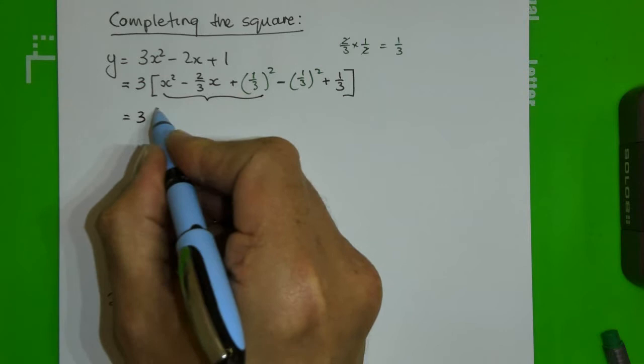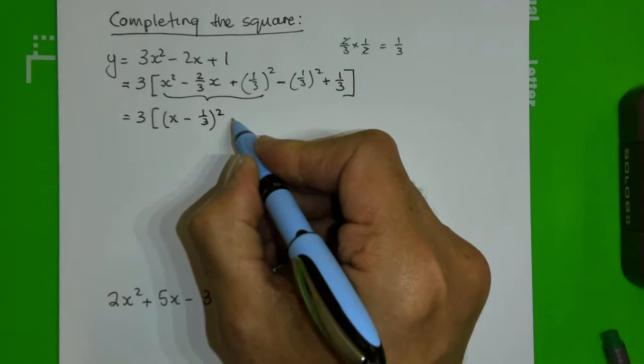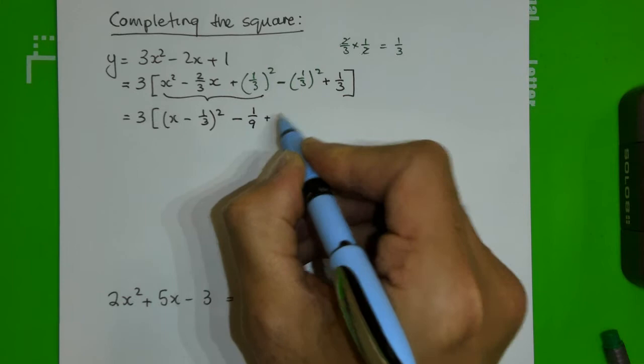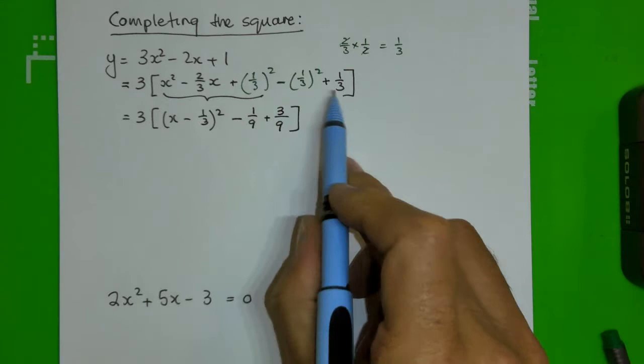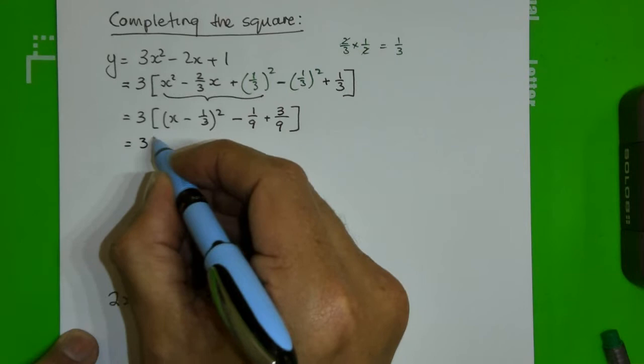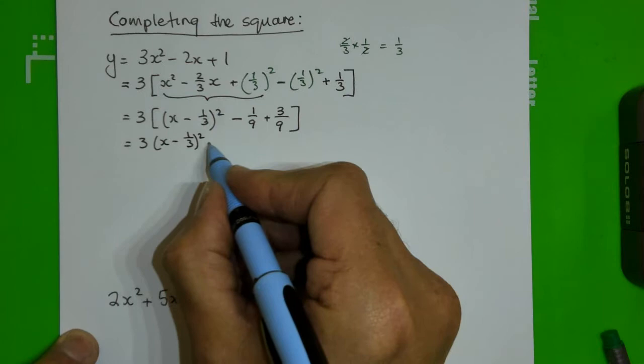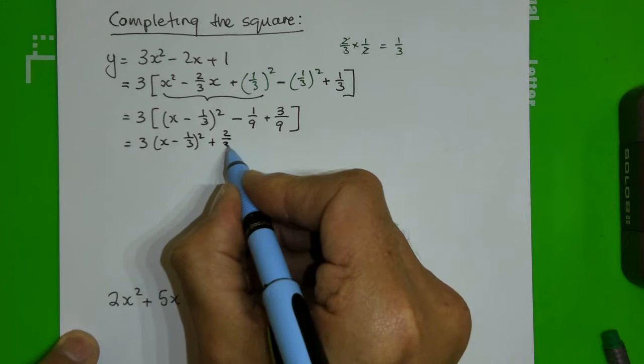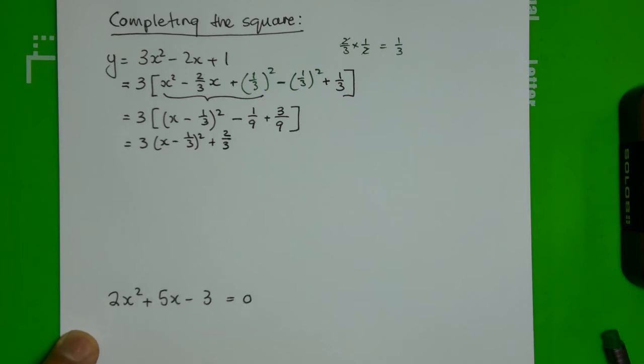This is the step that completes the square, so I get 3 times, and in this bracket I'll have (x − 1/3)² minus 1/9, then I write 1/3 as 3/9 so I can add those two fractions using the LCD. So now multiplying the 3 in, I get 3(x − 1/3)² plus 2/9, but 3 goes into 9 three times, so there's the completion of the square for the case where one side is equal to y.